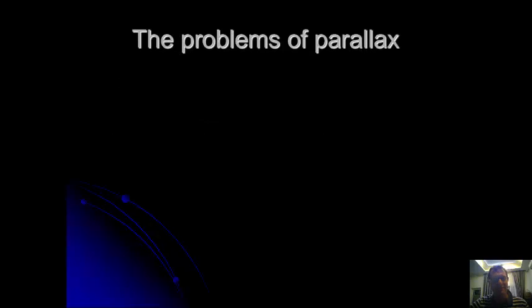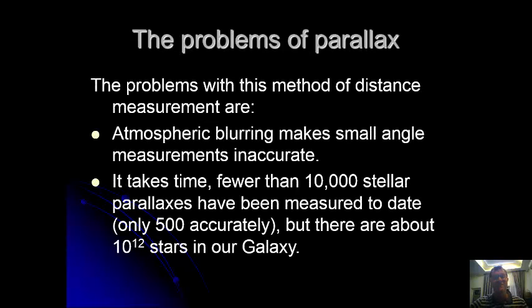There's some problems with parallax. It's okay for stars which are closer. But we've got to remember atmospheric blurring makes the angle of measurement fairly inaccurate, and that's because the atmosphere is moving around, so having a good measurement of the parallax is tricky.